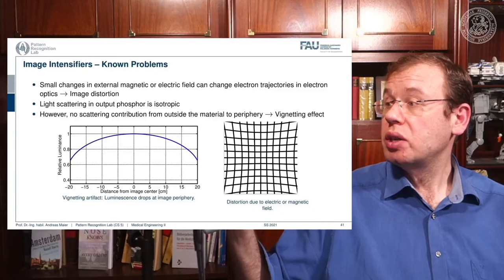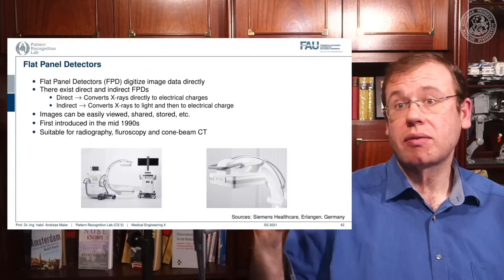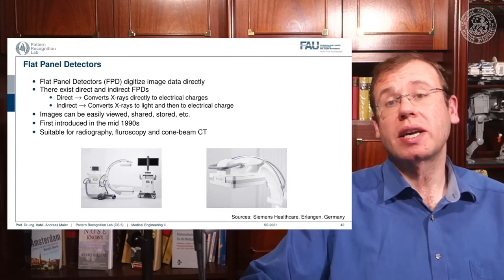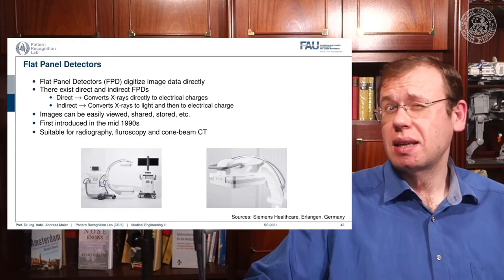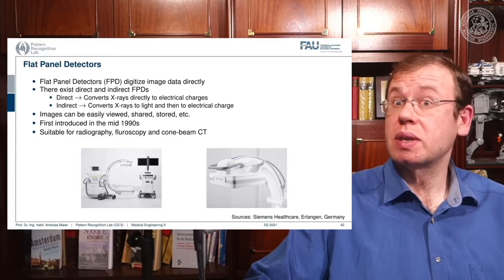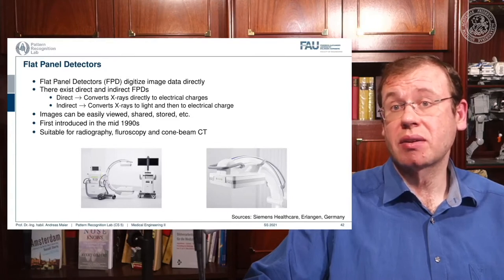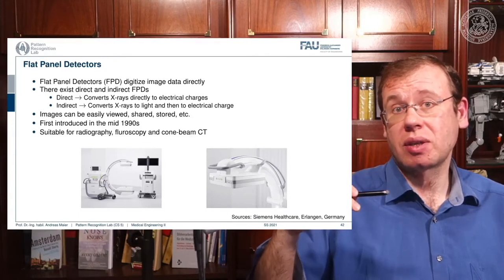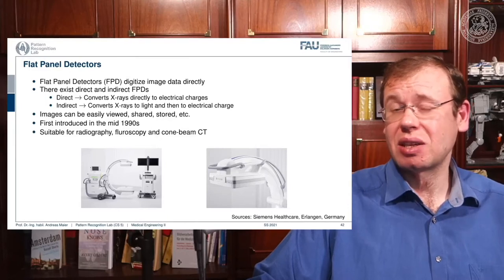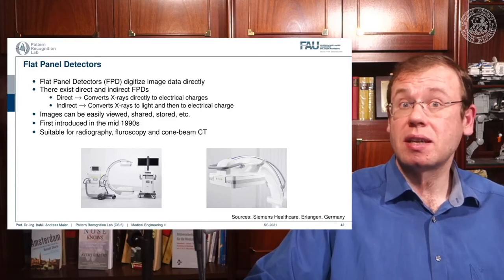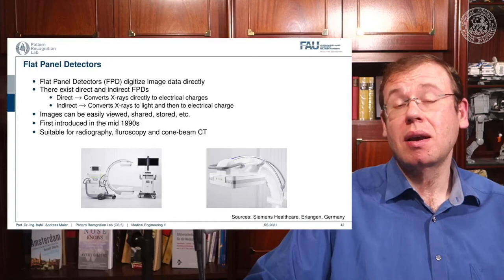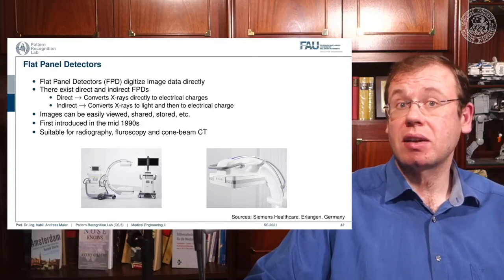An alternative approach is the flat panel detector. Flat panels can also be operated close to a magnetic field, which is very nice. A challenge is operating an x-ray source within a strong magnetic field — a rotating anode inside a strong magnetic field acts essentially like an electronic brake, so it's not clever to use rotating anodes with x-ray sources inside an MR scanner. However, it can be done using a static anode design in that case.